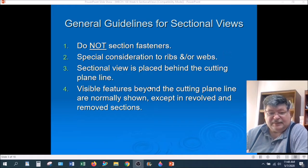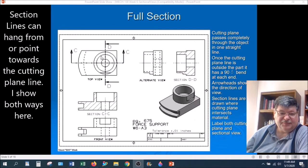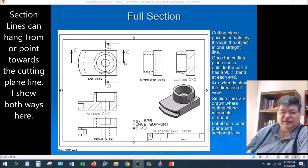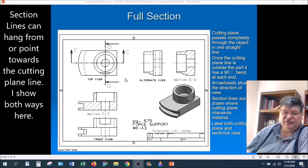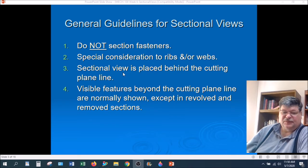Number three, sectional views placed behind the cutting plane line. Let's go to this one. Here's an example. Here's the cutting plane line, DD and CC. This is behind CC. This is behind the line. Or in other words, the arrows are pointing in the direction of view. So just remember that the arrowhead is pointing in the direction of view and that the arrows point away from the section view. So that's number three. Section view is placed behind the cutting plane line.